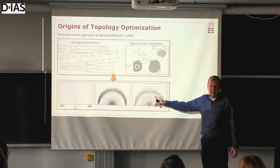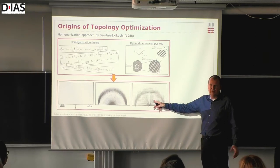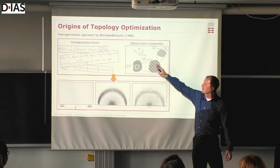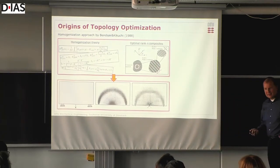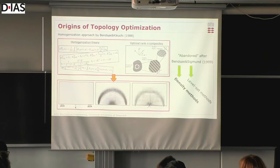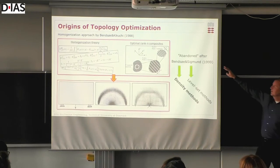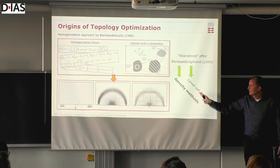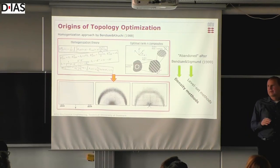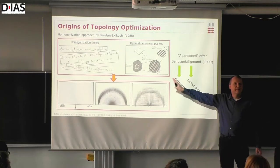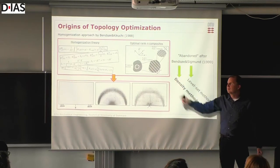The problem was these structures are not easily manufacturable, so people looked for other ways to do this, skipping all of the advanced math. After work I did with Bensu in 1999, these simpler methods — density methods, level set methods — became the de facto standard for doing topology optimization. And these advanced theories were left behind, but I will come back to those later on.